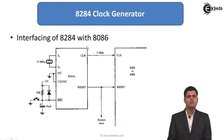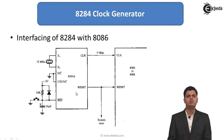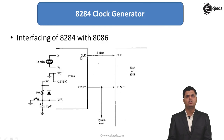Apart from that, the F/C bar pin is used for selecting either the EFI pin or x1 and x2, and the C sync pin is used for syncing between the external clock and the internal clock. An RC circuit is used for power-on reset. From the 8086 side, the clock output of the 8284 is provided to the clock input of the 8086, and the reset output of the 8284 is provided to the reset input of the 8086.